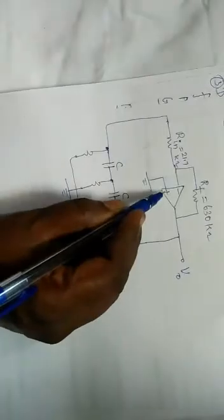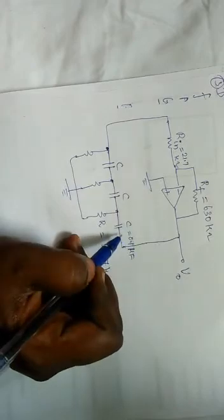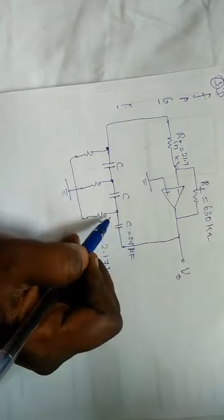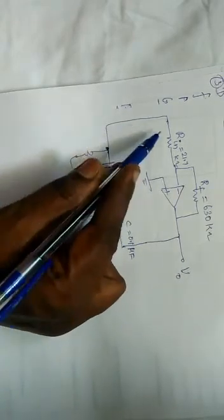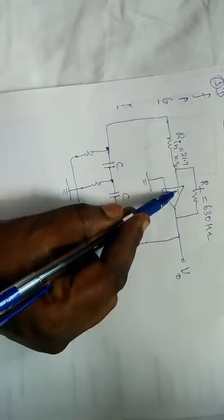The plus terminal is grounded. The output voltage through the feedback network — the RC network — is given to the minus terminal. This is our designed circuit with all values substituted.